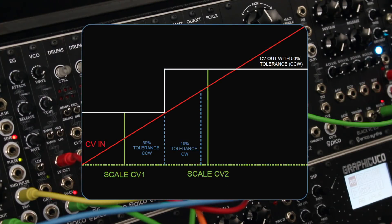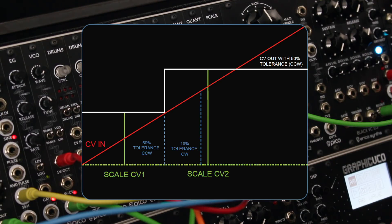With the tolerance knob you can adjust the CV range around a given note's CV in which the module advances to the next CV stage. At the minimum value the quantizer will move to the next step at the midpoint between notes. At the maximum level the tolerance is 10%, so the quantizer will move to the next step when the incoming CV signal level is almost the same as the CV of the given note.